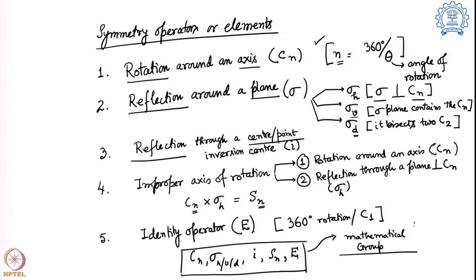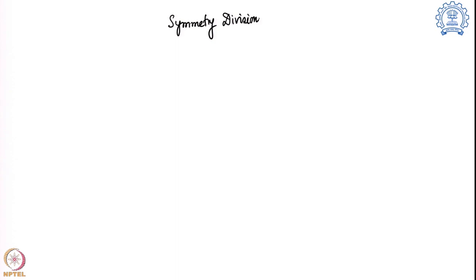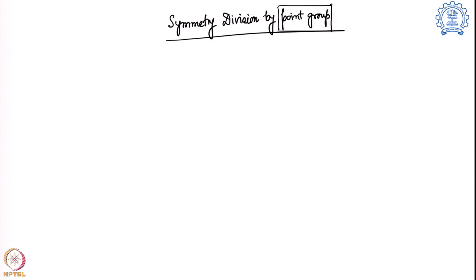We are going through this because we want to define molecules using mathematical groups so we can easily identify the different symmetry elements present. If a molecule contains certain symmetry elements, we can divide it among different groups. These can be divided into 4 broad sections: non-rotational groups, single axis rotation groups, dihedral groups, and cubic groups.